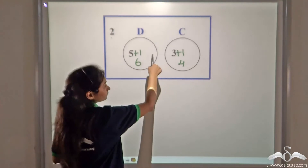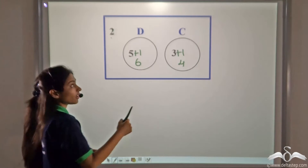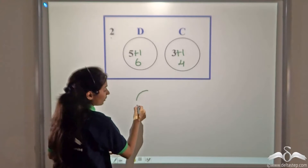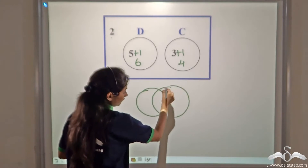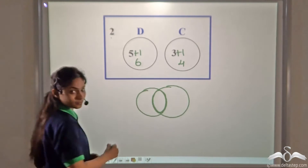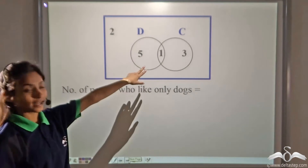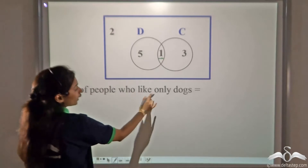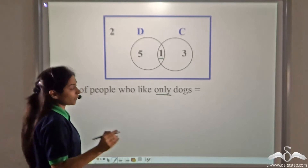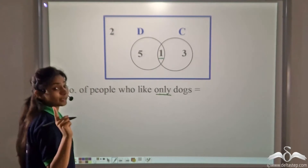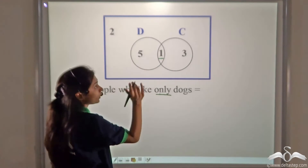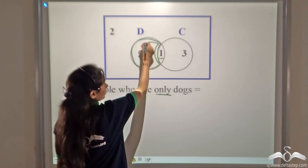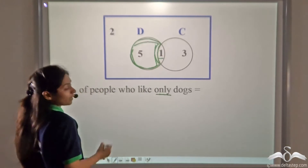Where do we write common people? When an element belongs to both D and C, it goes in the intersection. So that one friend who likes both dogs and cats is placed in the intersection. The number of people who like only dogs — not cats — is five, represented by the dogs-only region excluding the intersection.